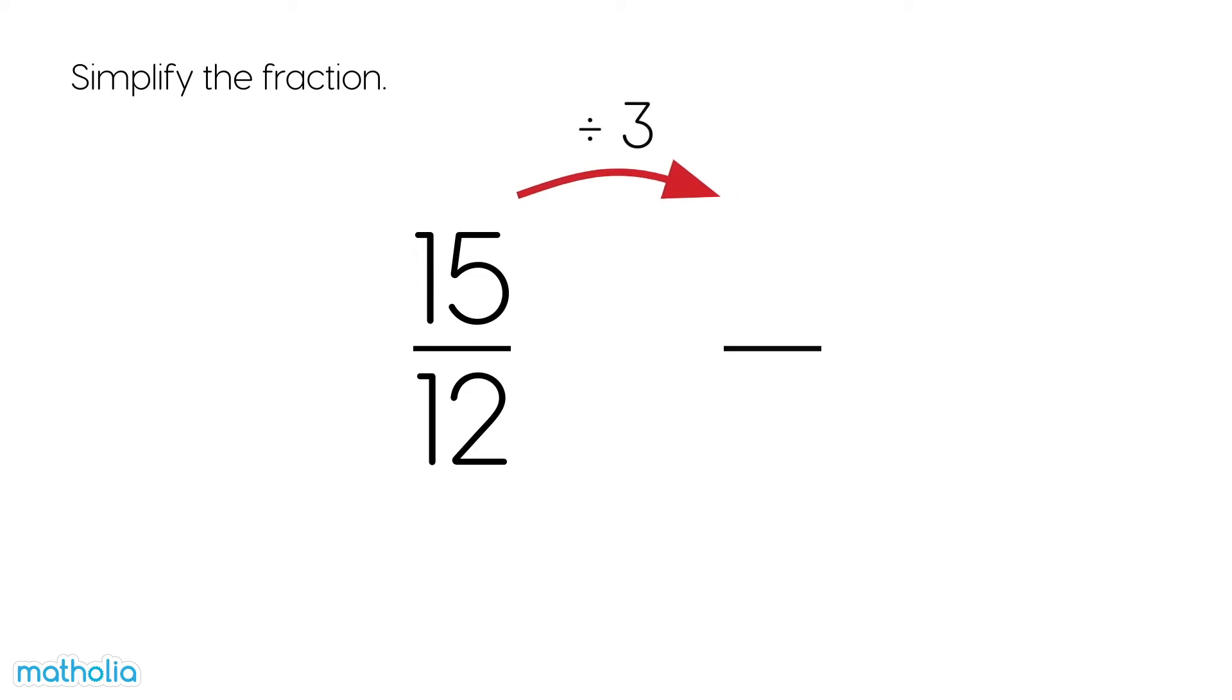15 divide 3 is 5. 12 divide 3 is 4. 15 twelfths equals 5 quarters. 5 quarters is in its simplest form.